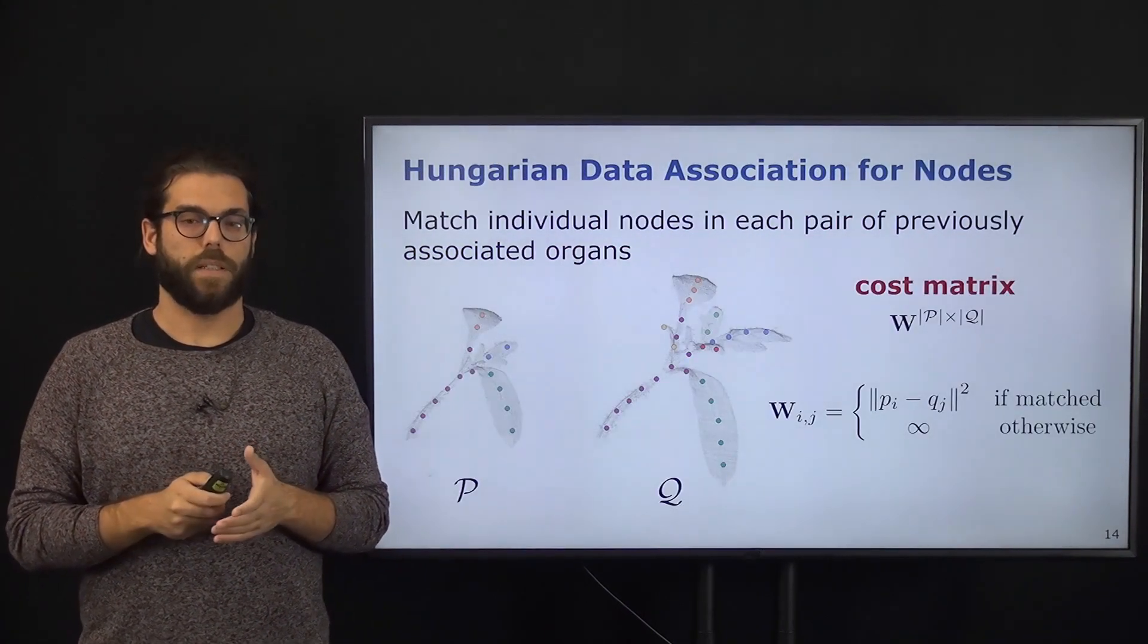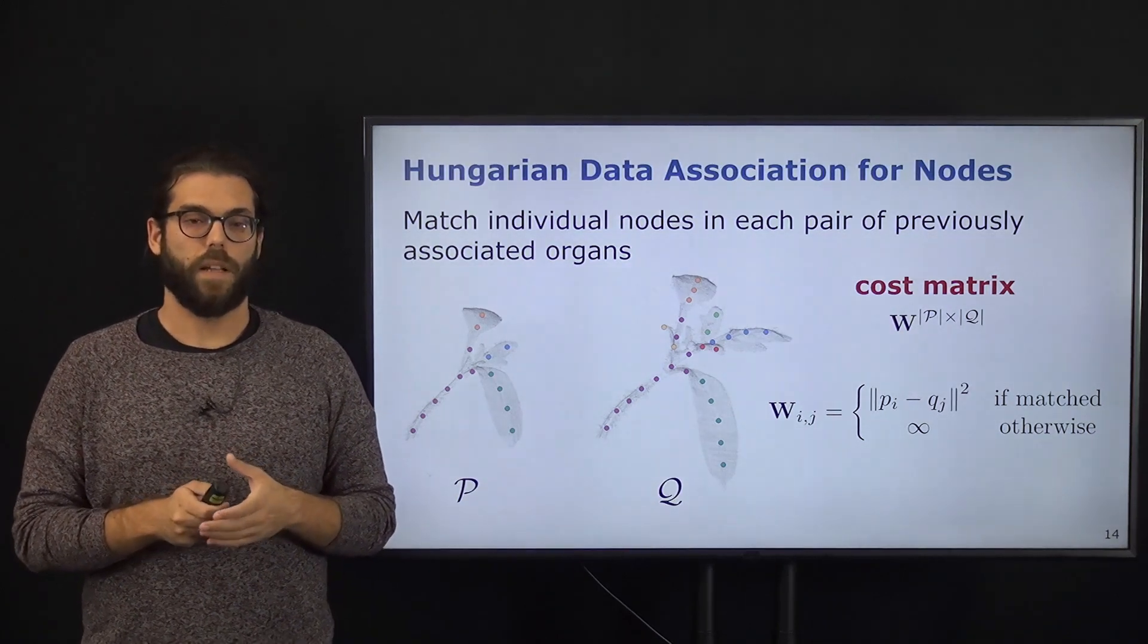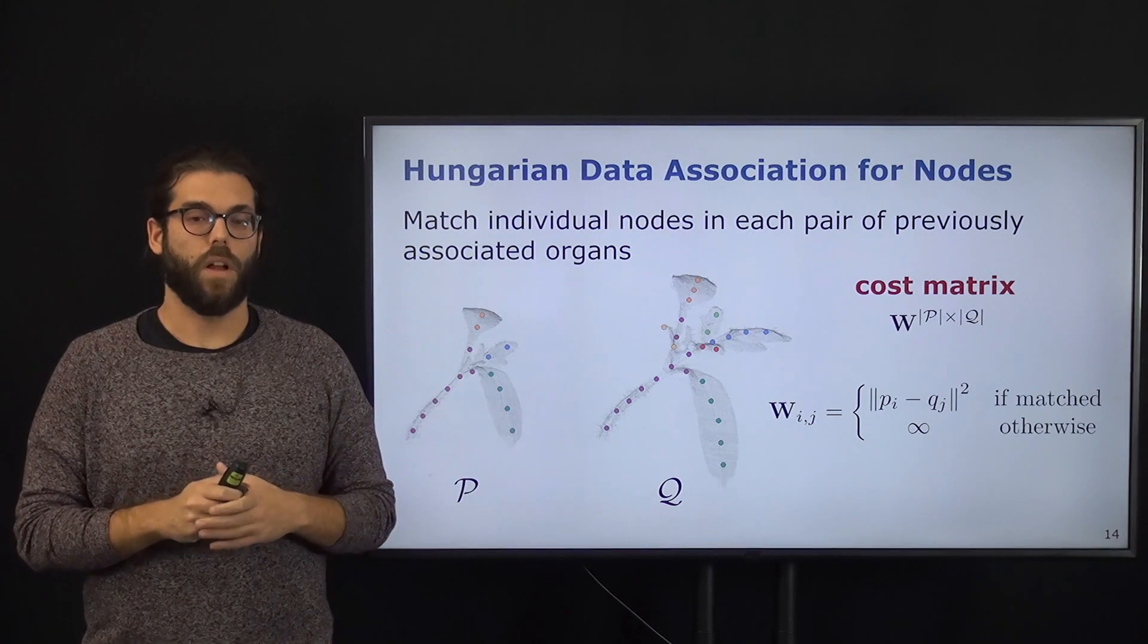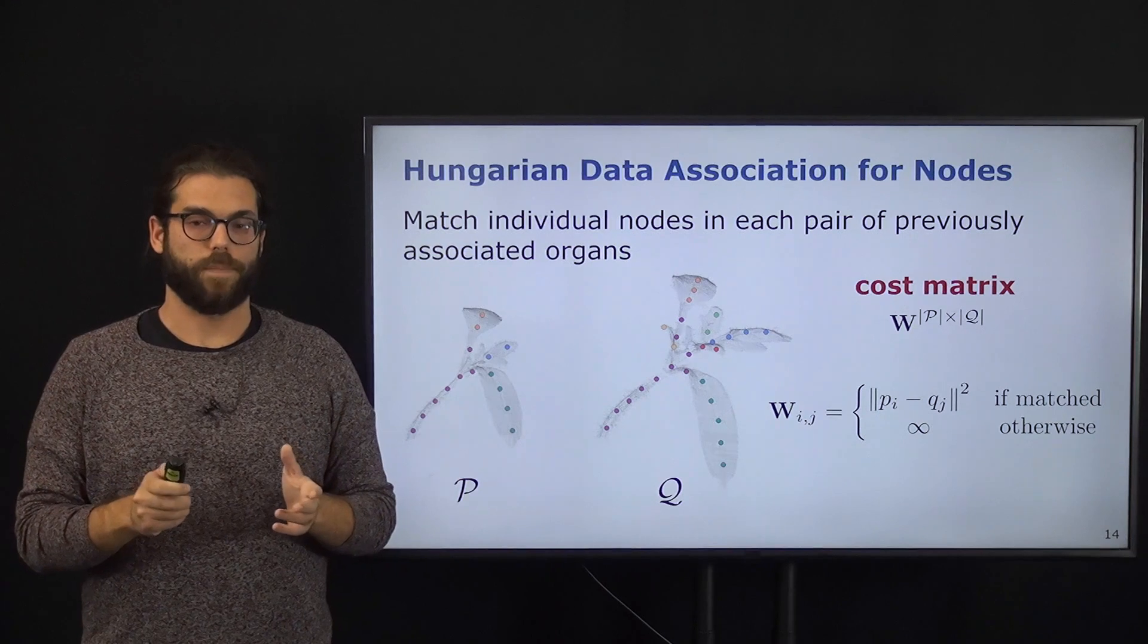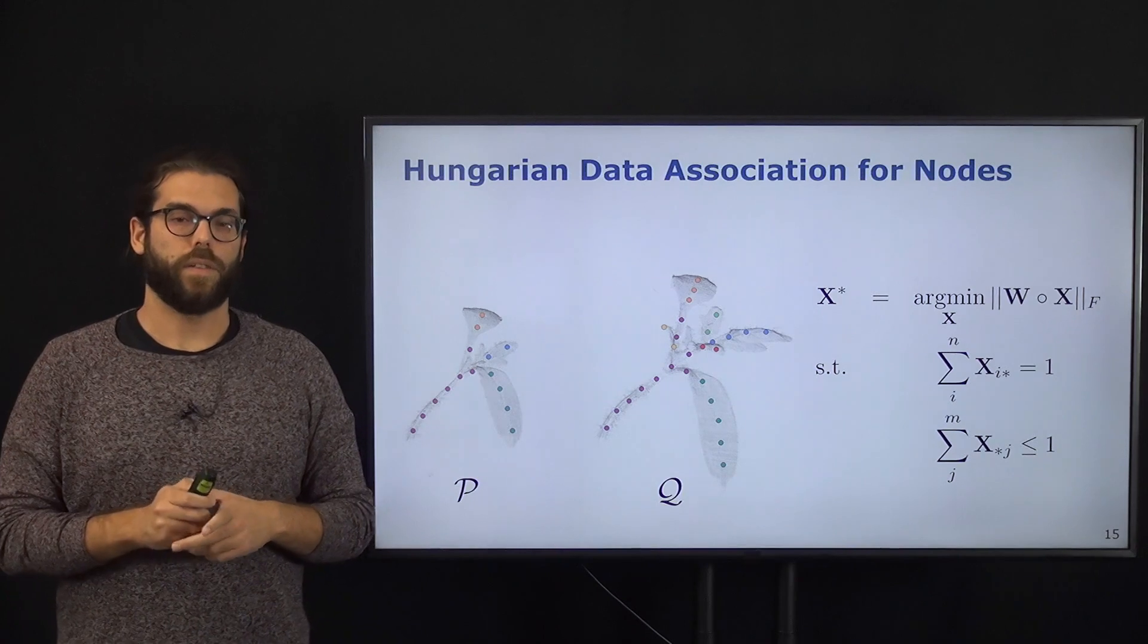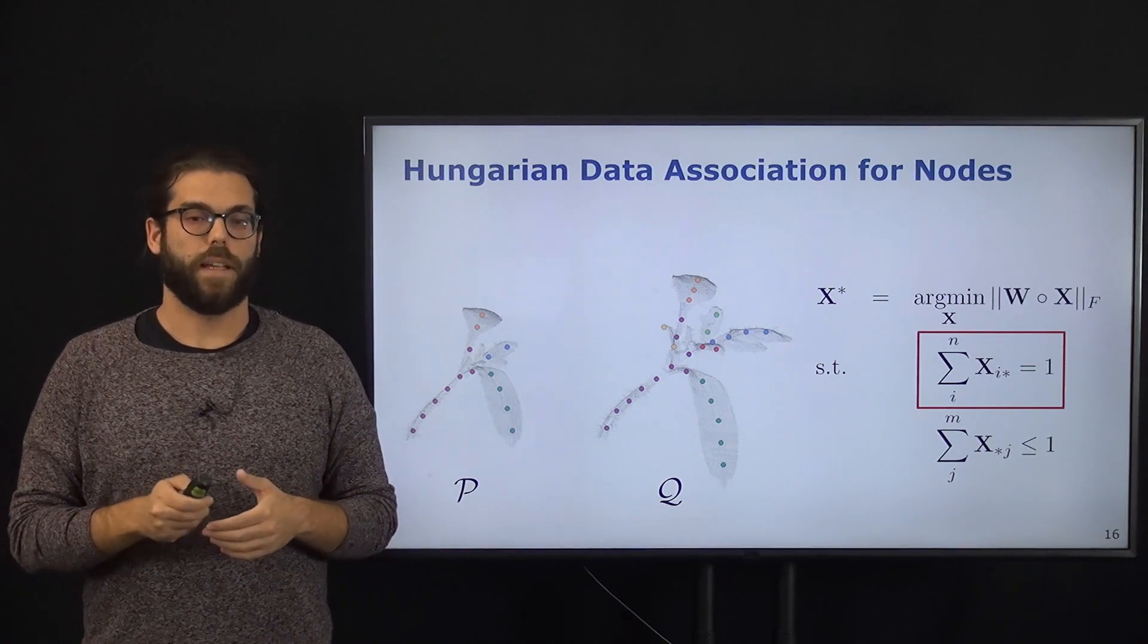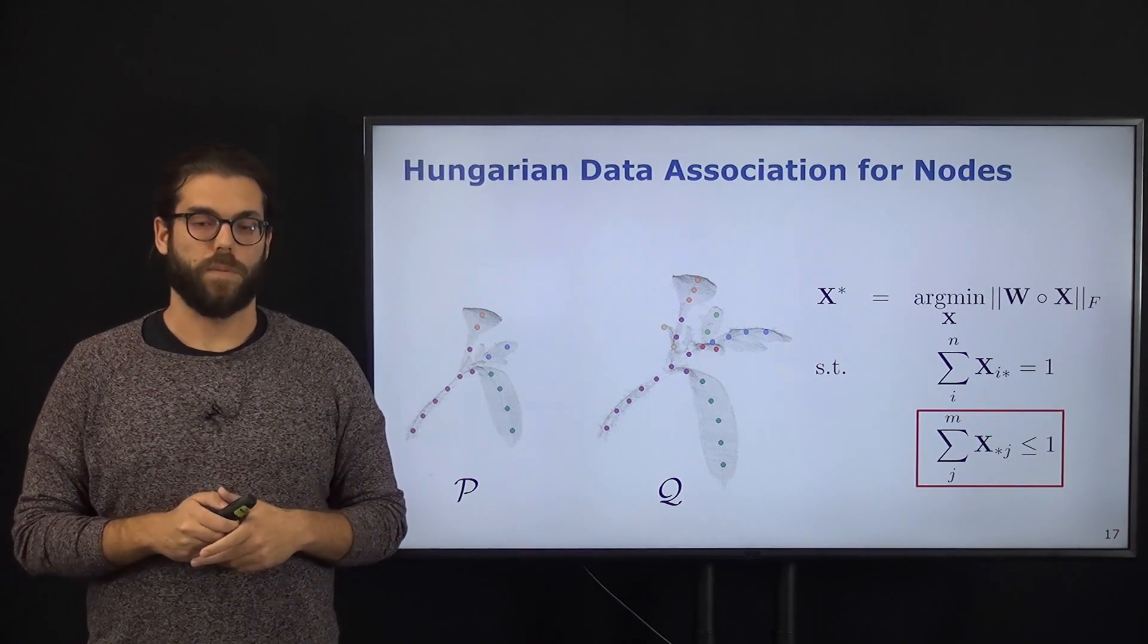We will use this first association between organs to further compute the association between each node in the skeletons. Again, we define a cost matrix in which each element ij is the Euclidean distance of the node in skeleton P and one node in skeleton Q, only if those two nodes belong to already associated organs. Once we define this cost matrix, we define two additional constraints. The first constraint tells us that each node in skeleton P will be matched to exactly one node in skeleton Q, and the second constraint tells us that each node in skeleton Q has at most one correspondence.